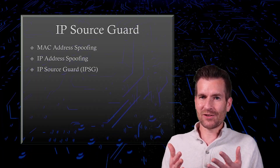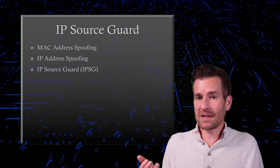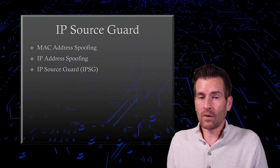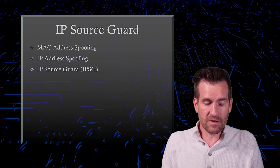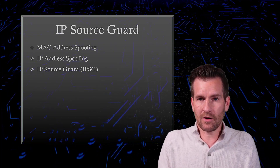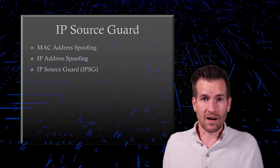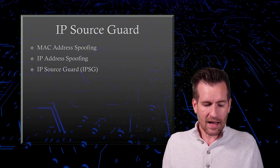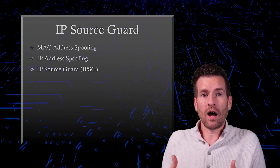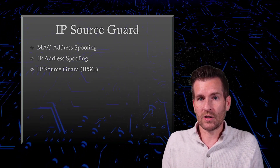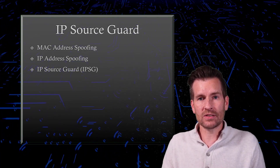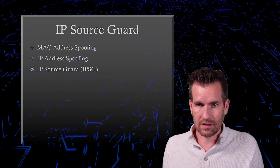This is definitely a shorter video, and the reason is that it's using the same concepts we've already been talking about. We know what spoofing is, so it makes sense — MAC address spoofing, IP address spoofing. And IP Source Guard functions very similar to how our other filtering techniques work. So this is just yet another step in protecting our network.